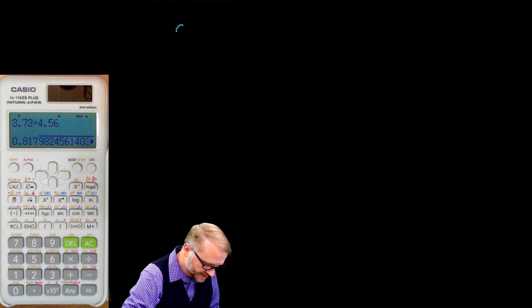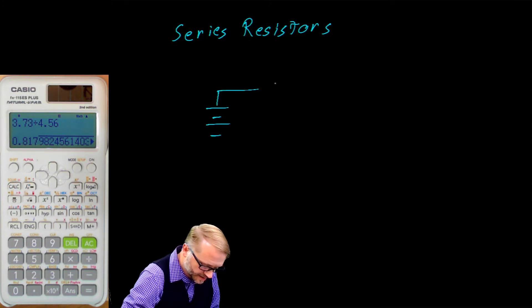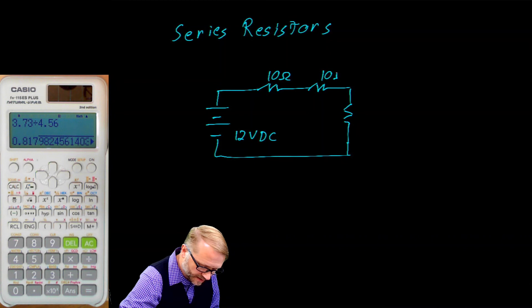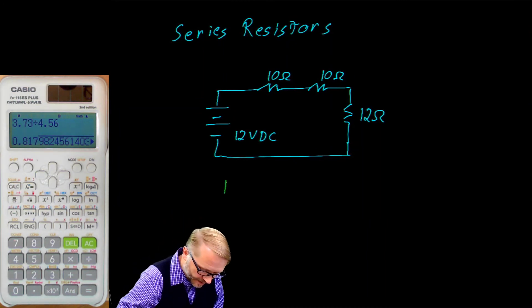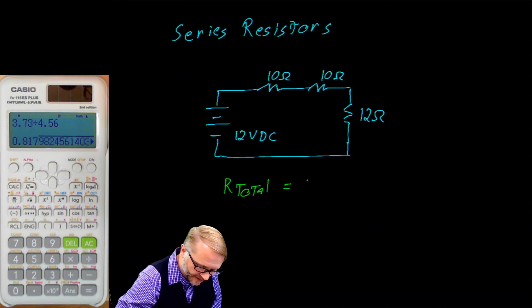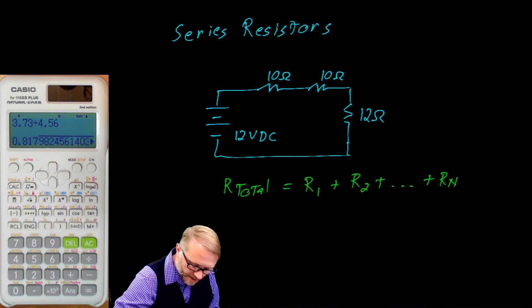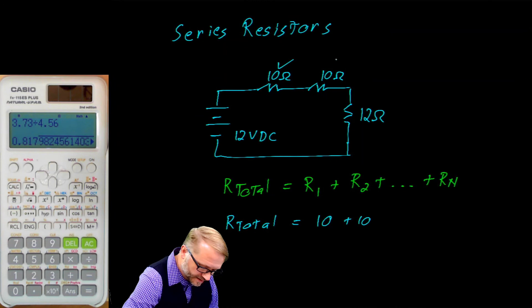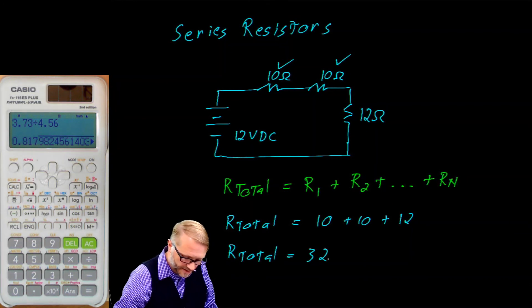New topic: series resistors. If we have a circuit with 12 volts DC, 10 ohms, 10 ohms, and 12 ohms, this is the important equation you want to write down: R total equals R1 plus R2, and we can extend that to N number of resistors. For this circuit, R total equals 10 plus 10 plus 12, so our R total is 32 ohms.